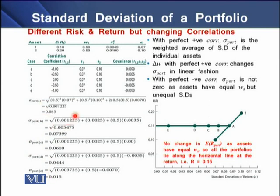What do these values basically say? With perfect positive correlation, the riskiness of a portfolio is the weighted average of the standard deviations of the individual assets, as seen in these five examples. With changing weights and perfect positive correlation, changes in portfolio riskiness occur in a linear fashion. With perfect negative correlation, the riskiness of a portfolio is not zero because the assets have equal weights but unequal standard deviations. These are the observations we can see in our computations.